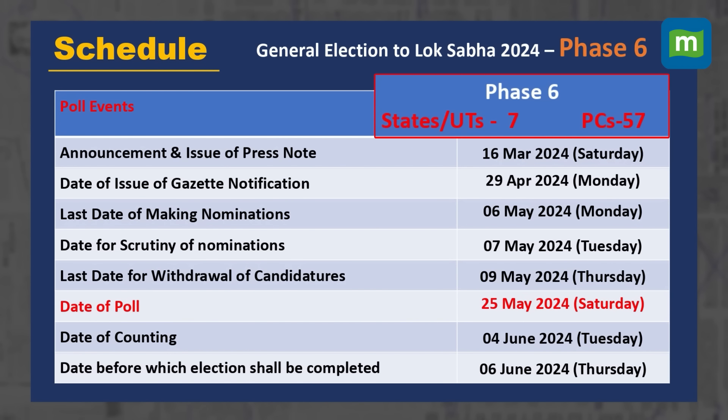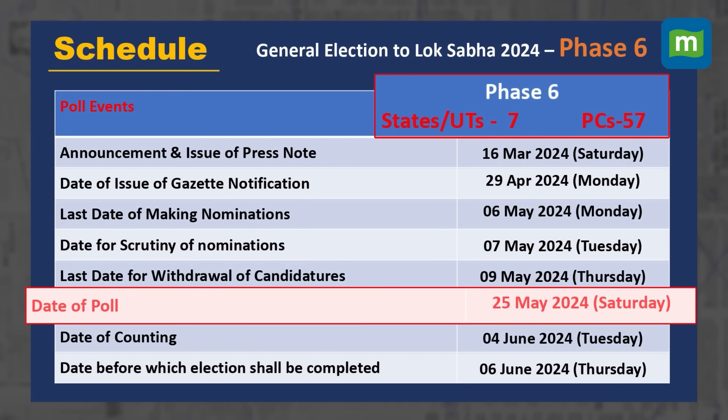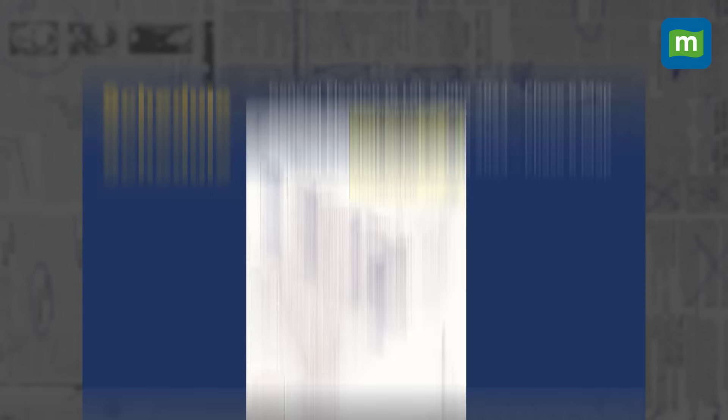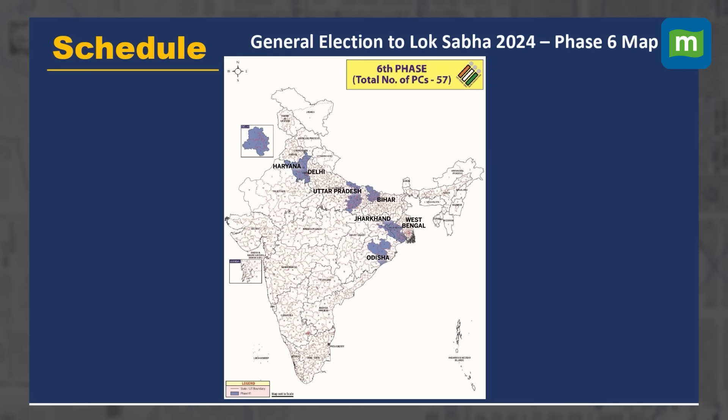Phase 6 will be held on 25th May. Under this, all constituencies of Haryana and Delhi along with parts of Eastern UP, Bihar, West Bengal, Jharkhand and Odisha will go to polls. 57 constituencies of 7 states and UTs will be under polling.